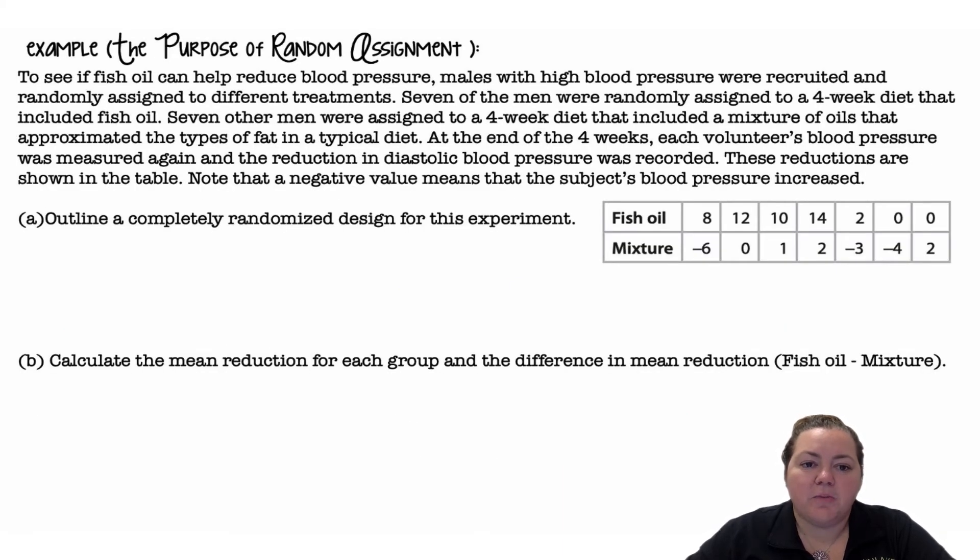The purpose of random assignment: To see if fish oil can help reduce blood pressure, males with high blood pressure were recruited and randomly assigned to different treatments. Seven of the men were randomly assigned to a four-week diet that included fish oil. Seven other men were assigned to a four-week diet that included a mixture of oils that approximated the type of fats in a typical diet. At the end of four weeks, each volunteer's blood pressure was measured again and the reduction in diastolic blood pressure was recorded. These reductions are shown in the table. Note that a negative value means that the subject's blood pressure increased.